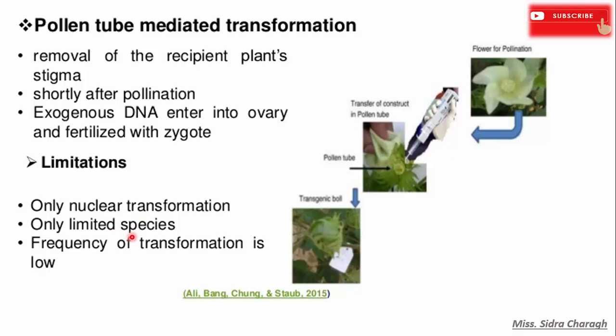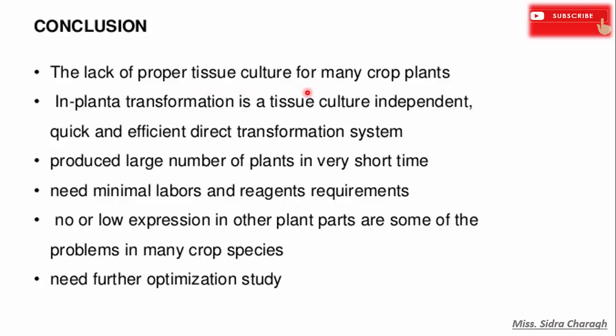In-planta transformation is a tissue culture independent, quick and efficient direct transformation system that produces a very large number of plants in relatively short time with minimal labor and resources required. Some problems include no or low expression in other plant parts in many crop species. In-planta transformation also needs further optimization studies. That covers the in-planta transformation methods.